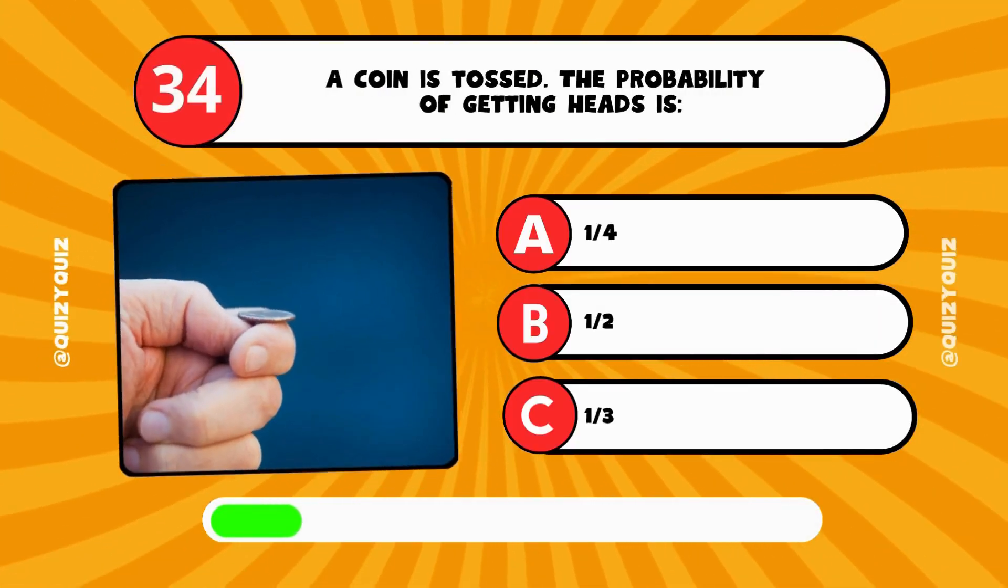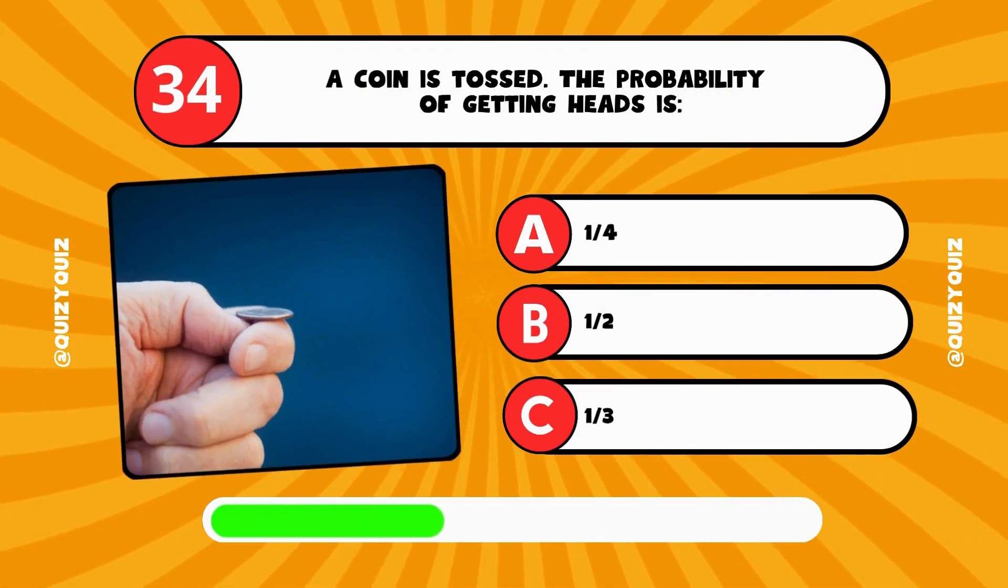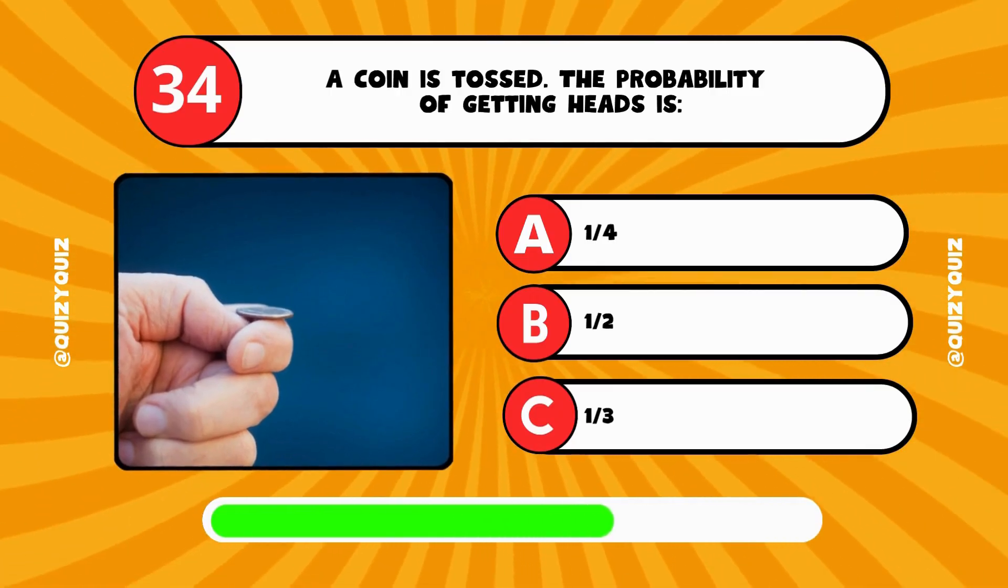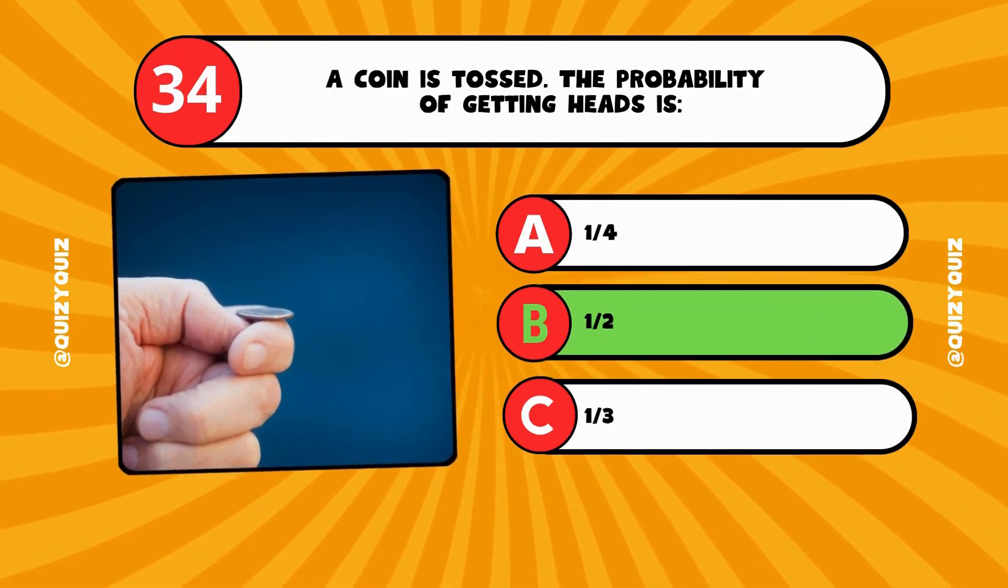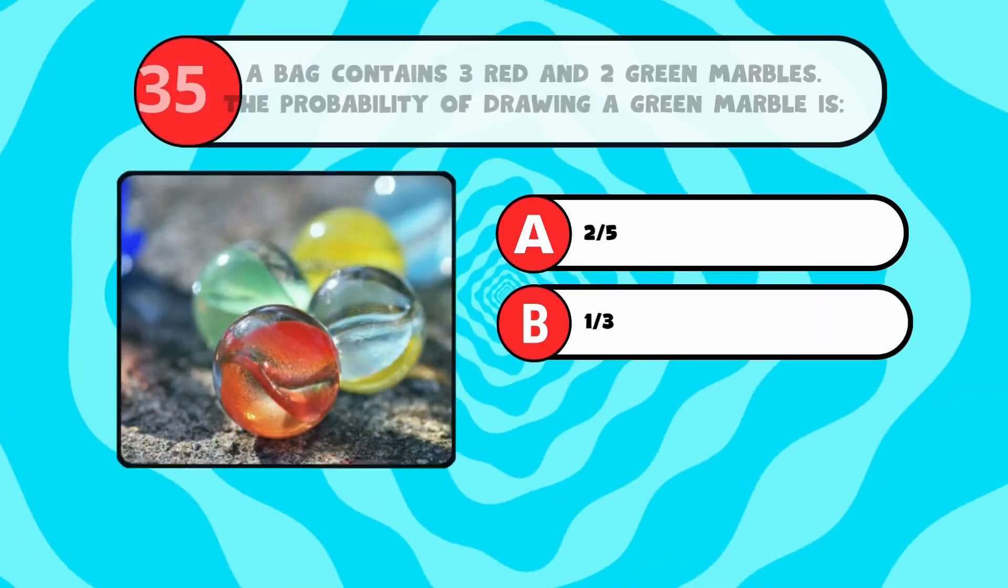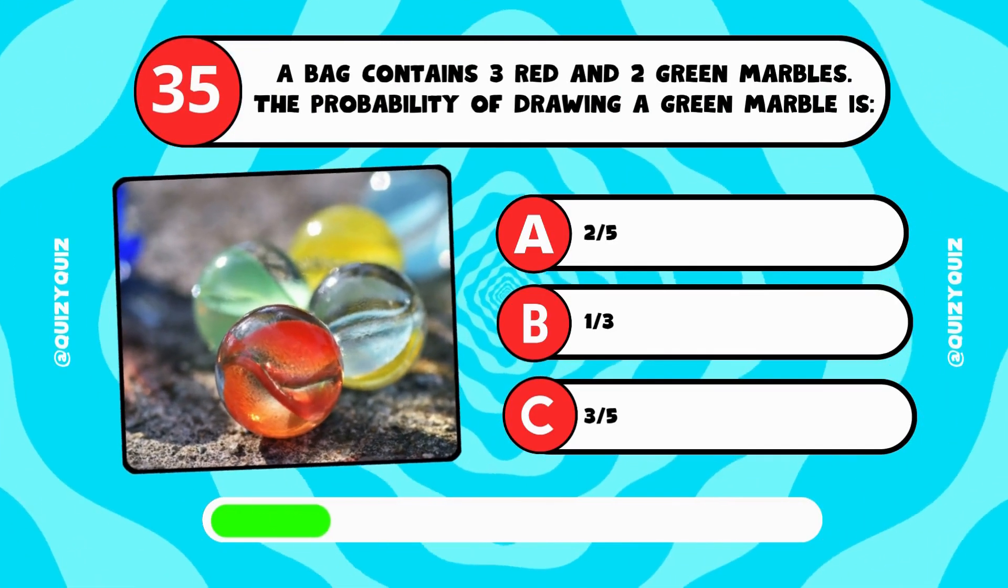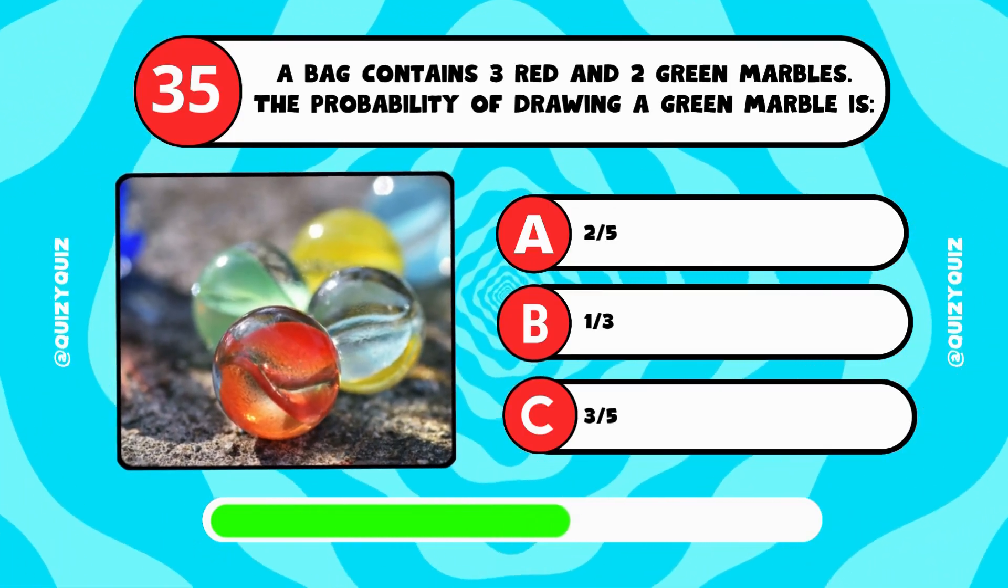A coin is tossed. The probability of getting heads is. A bag contains 3 red and 2 green marbles. The probability of drawing a green marble is